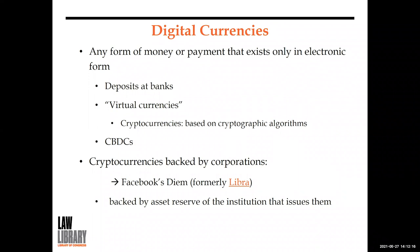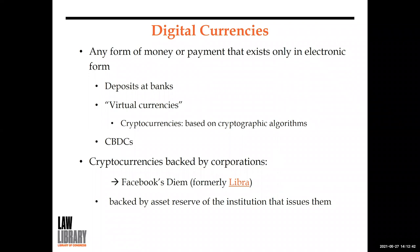The most important example is Facebook's Diem, formerly called Libra. Corporate cryptocurrencies are backed by the asset reserves of the institution that issues them. Facebook has millions of users, creating significant competition for central banks. Facebook originally planned to get a payment system license in Switzerland from FINMA, but those plans were abandoned. They decided to move operations to the United States and issue only a dollar-backed stablecoin. Diem initially proposed a universal currency tied to a basket of major currencies and government debt, but switched to multiple stablecoins after criticism.